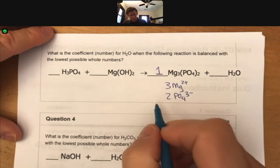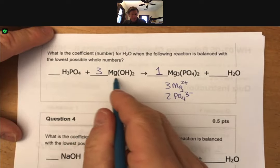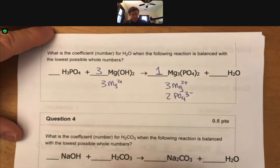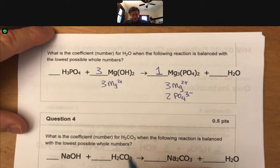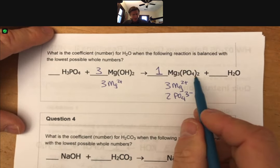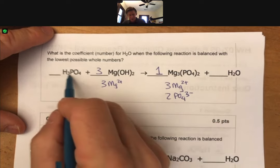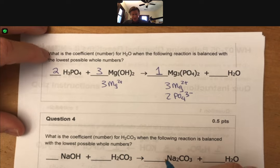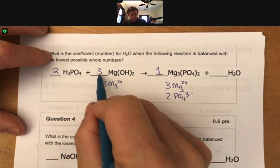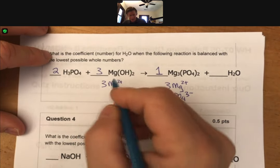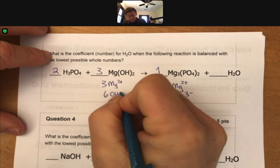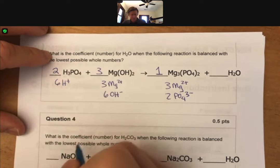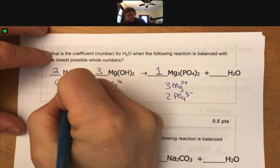Then we're going to need three of these here for three magnesium ions as well. And two, we have two phosphates, so we're going to need two over here. And that leaves us with three times two, that's six hydroxides. And two times three, that's six H+. And two phosphates.